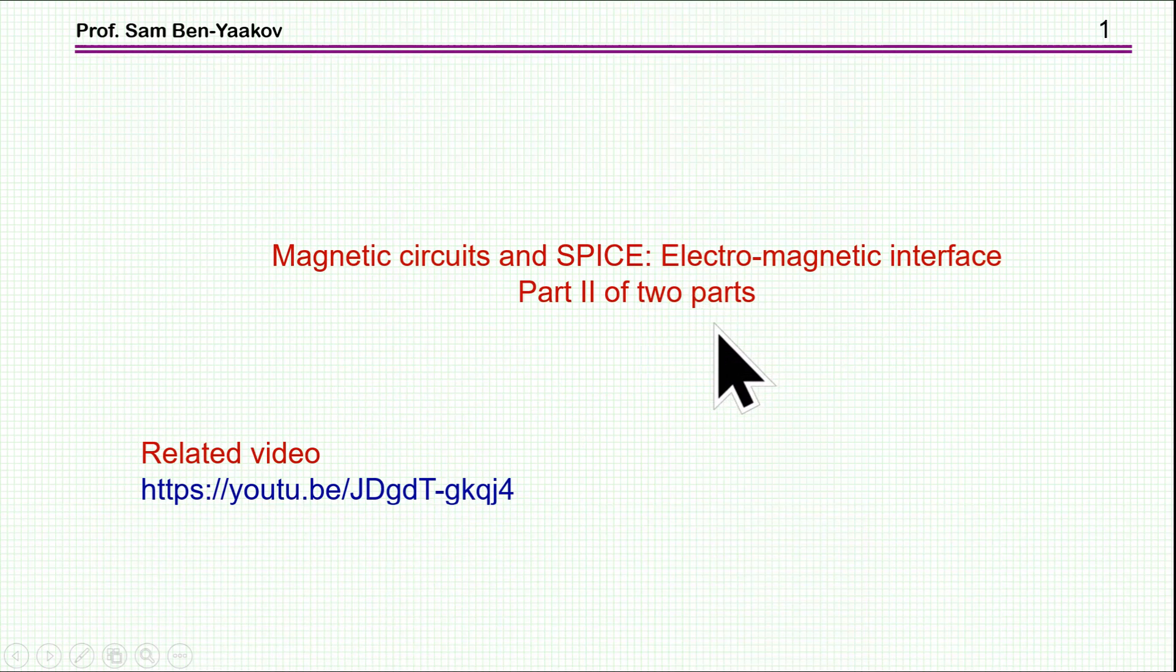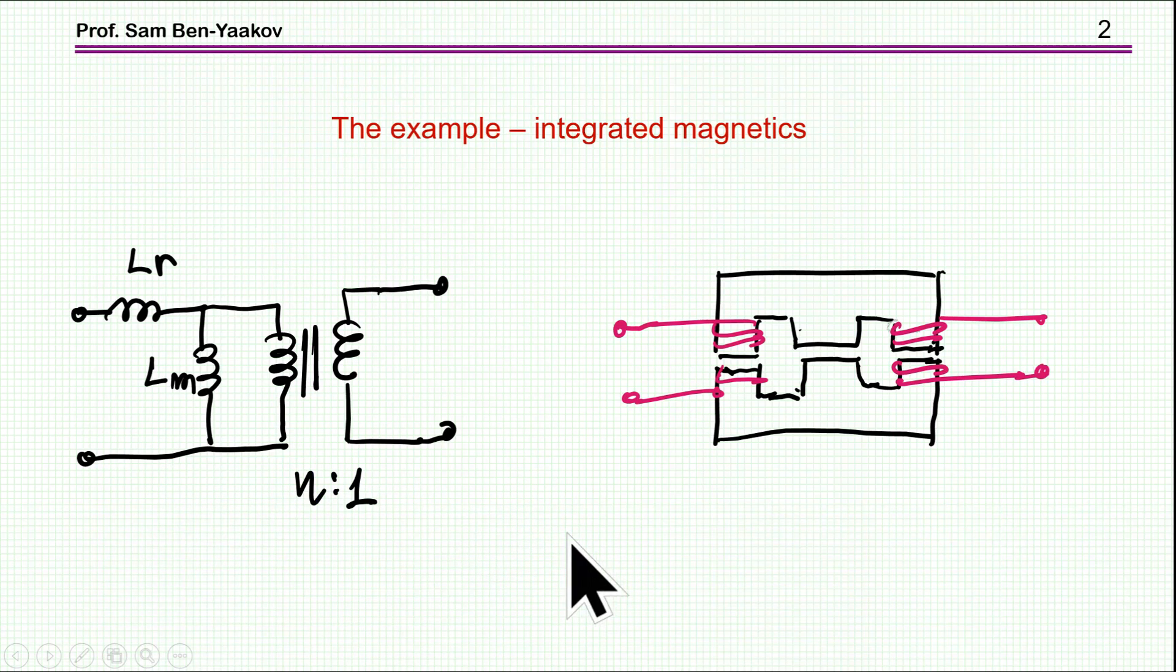The first part is the background of this whole issue and here is the link to it, and I'm going to print the link at the YouTube page of the video that you are now watching. In the first part, I was considering the case in which you have a number of magnetic elements, two inductors and a transformer like in an LLC resonant converter, and an embodiment which is using one integrated magnetics to actually have the same properties as these elements.